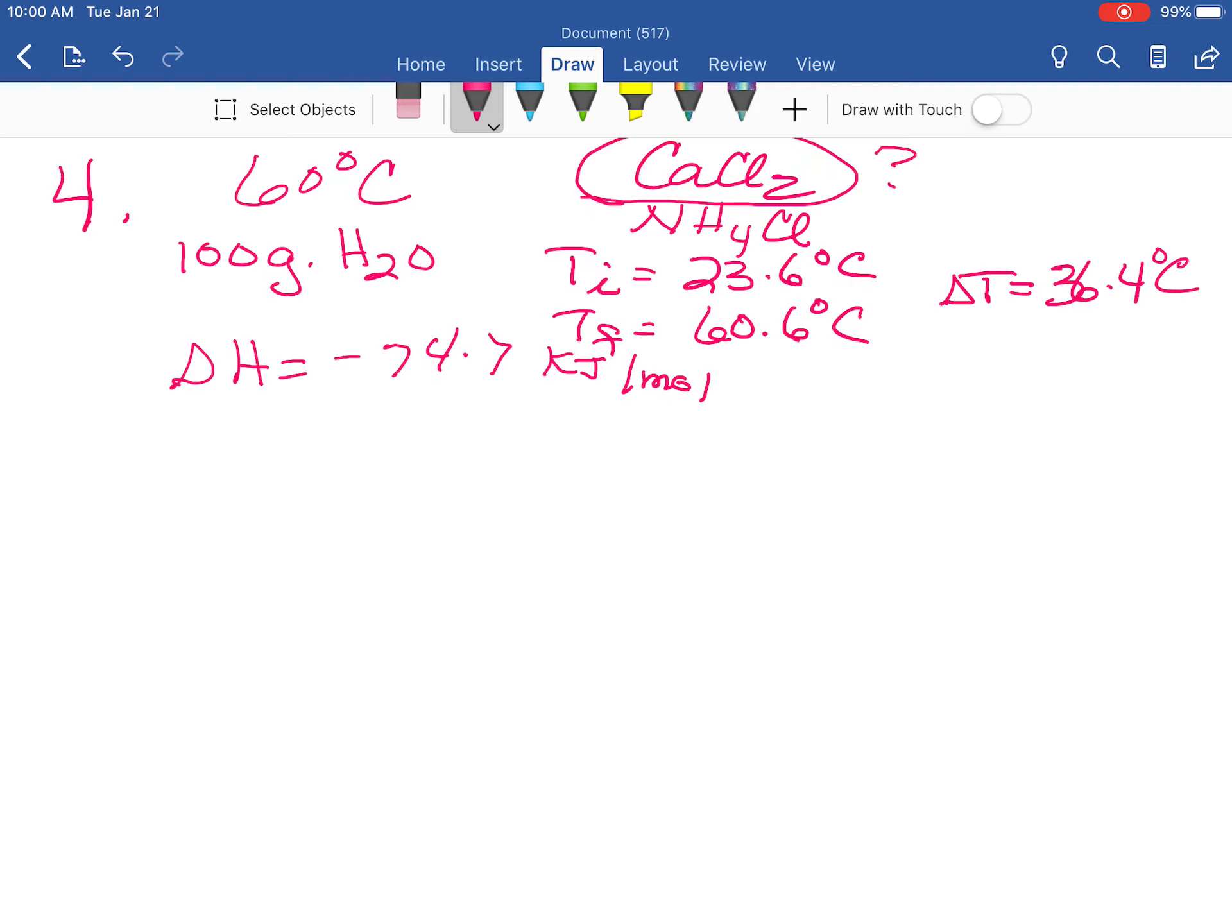So these pieces of information are going to be enough to help us figure out how much calcium chloride you will need to get to 60 degrees Celsius in a hot pack that also contains 100 grams of water. So the heat of your solution, or the Q of solution, is going to be equal to the heat of the water plus the heat of the calorimeter.